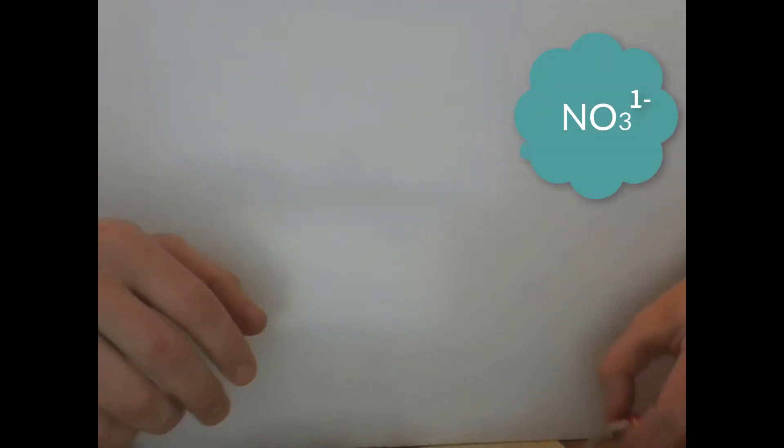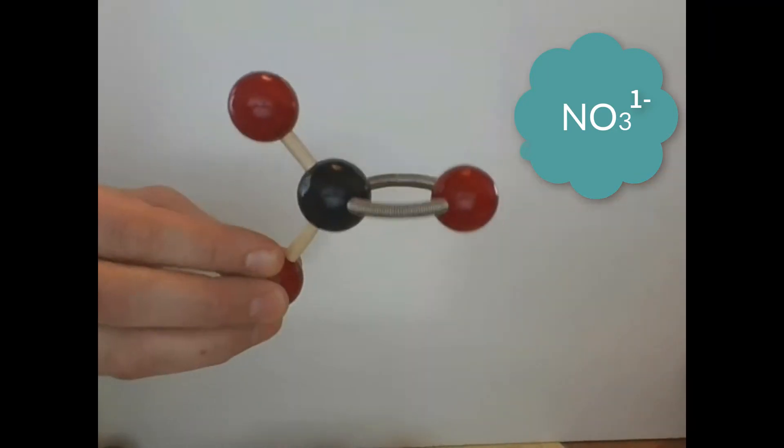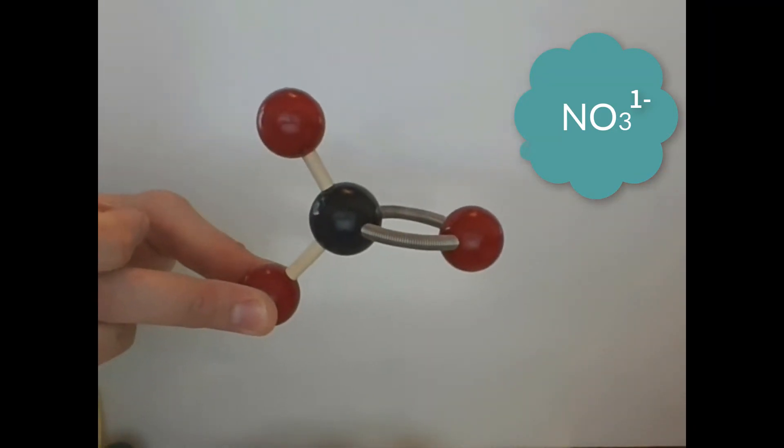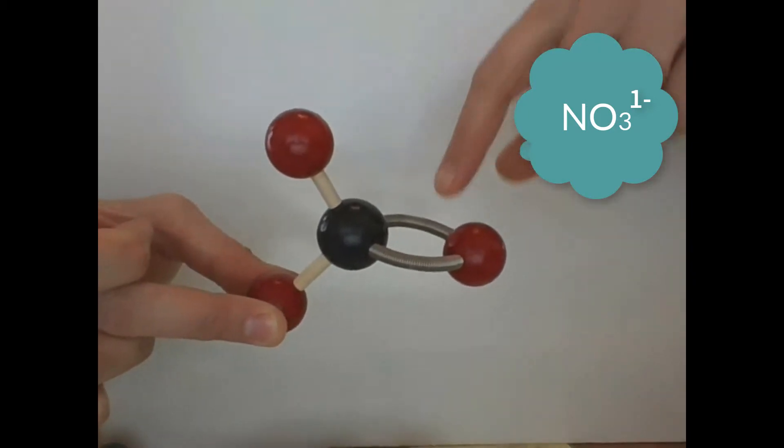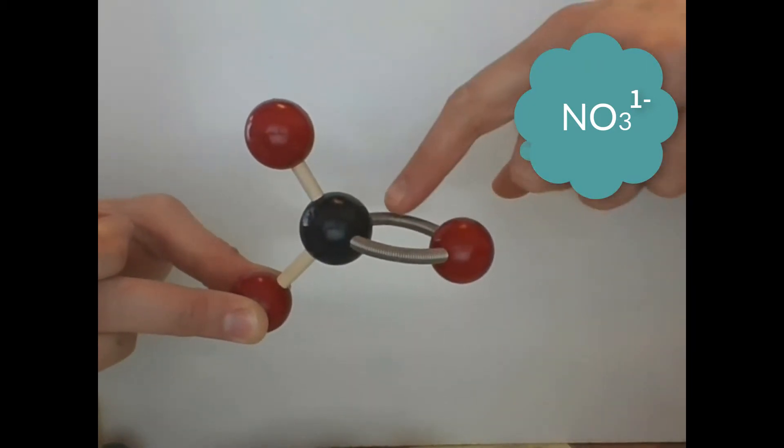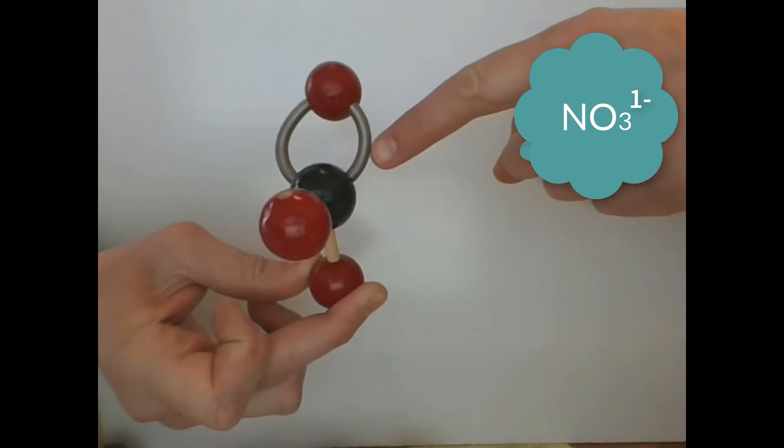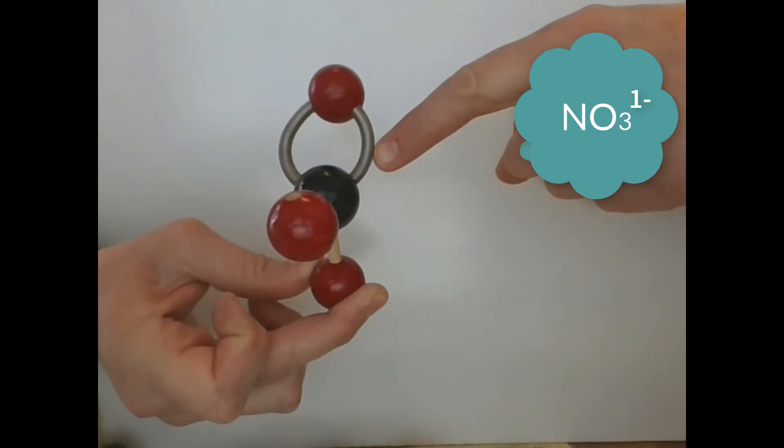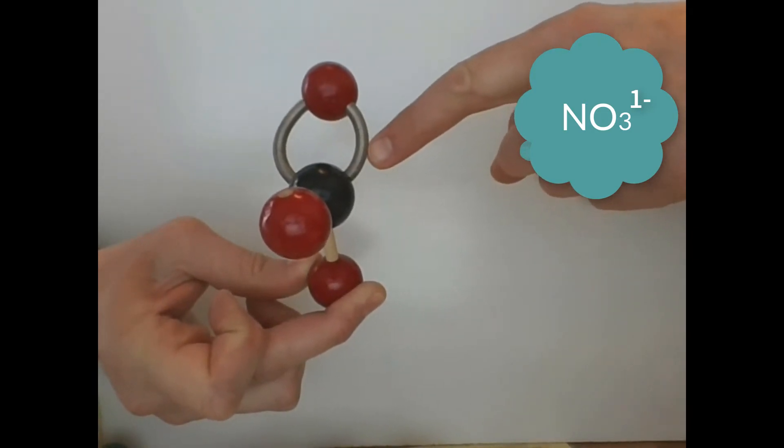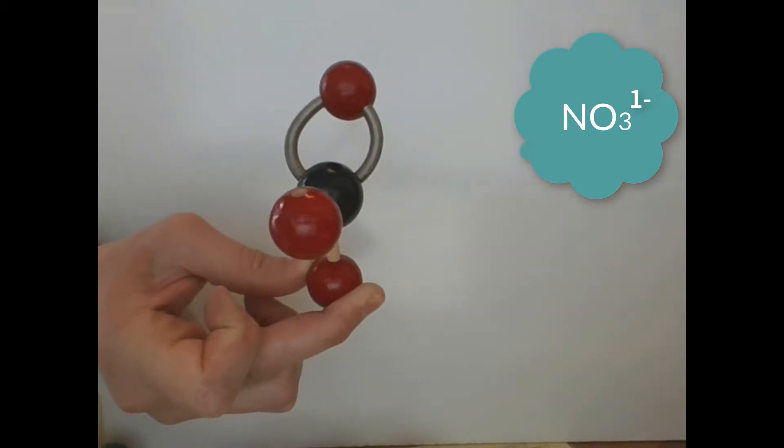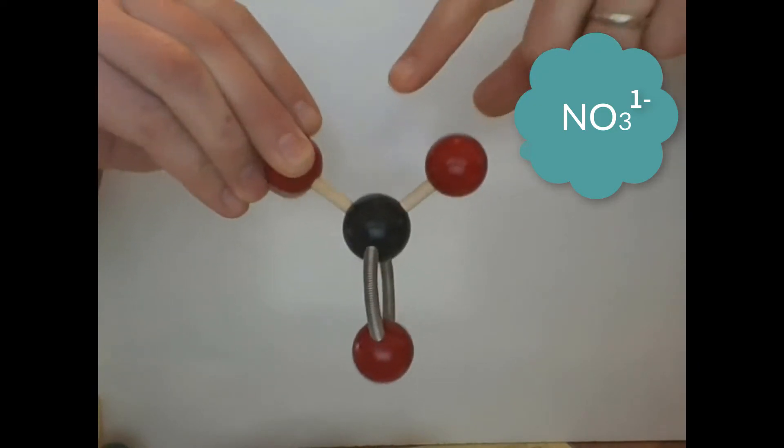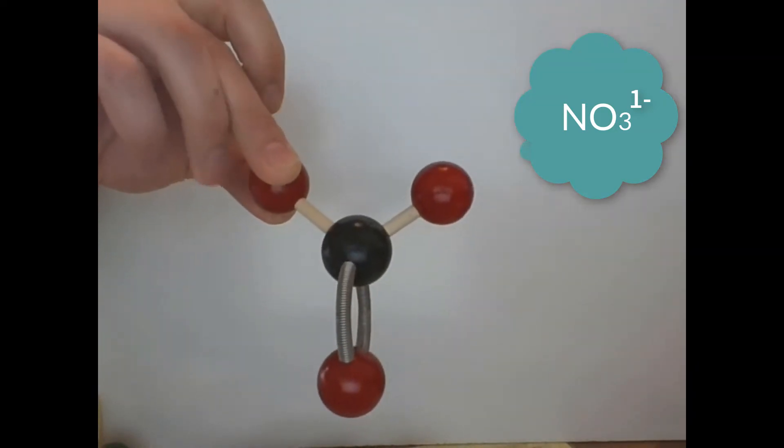Moving on to NO3, this is NO3, nitrogen in the center, oxygen is the surrounding. You'll notice that now I've used springs because I needed to get a double bond. Each one of these springs represents two electrons or a pair of electrons, so there's two pair of electrons here, a double bond.